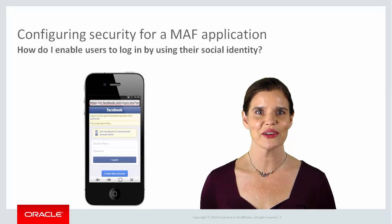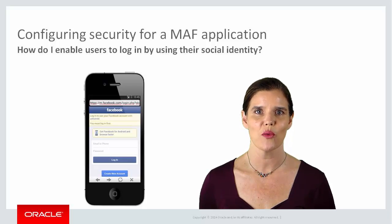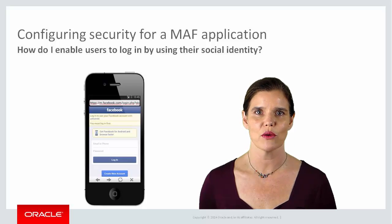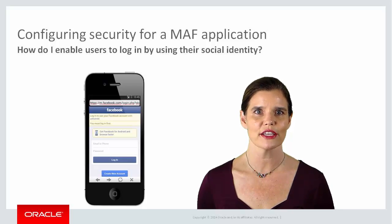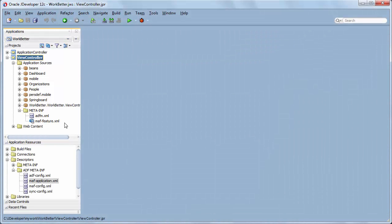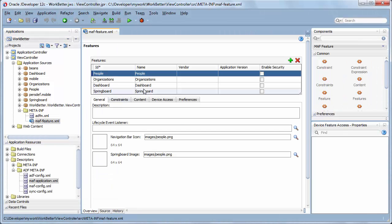Now let's see a demo that shows you how to enable security and configure a MAF application to use OAMMS as a relying party when interacting with internet-based identity authentication services. In this demo, I'll add authentication to the Work Better application — the application that you saw running in the Android emulator. The demo walks you through the steps required to implement the security shown in the earlier demo. I've already configured OAMMS, so I won't cover the OAMMS setup steps here. First, I locate the feature that I want to secure. The People feature appears when the user logs into the application, so I select the checkbox to enable security.